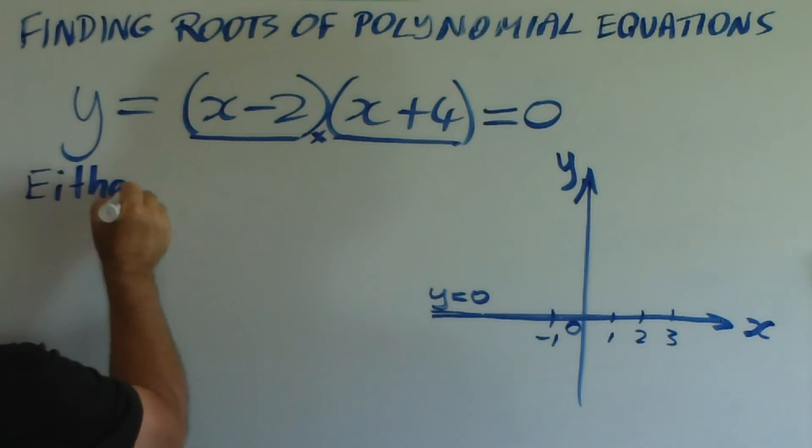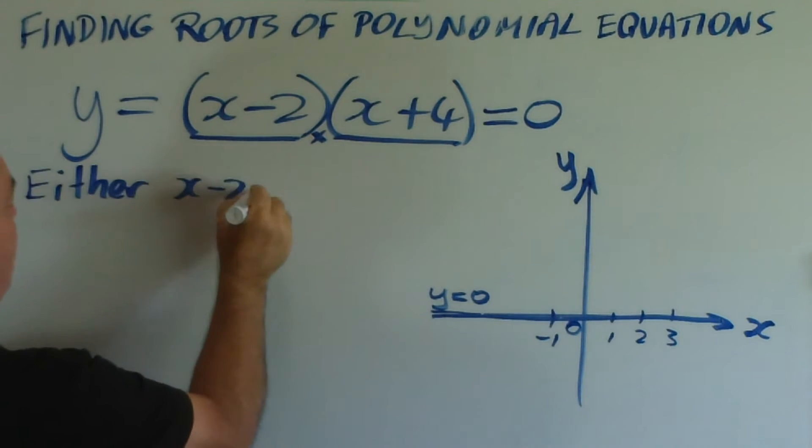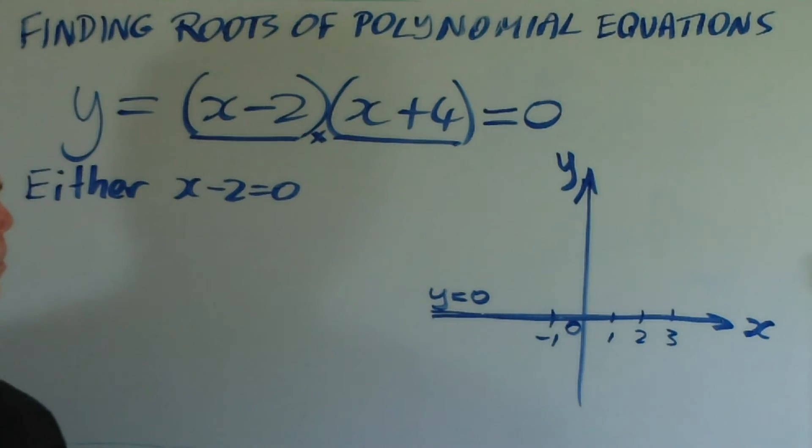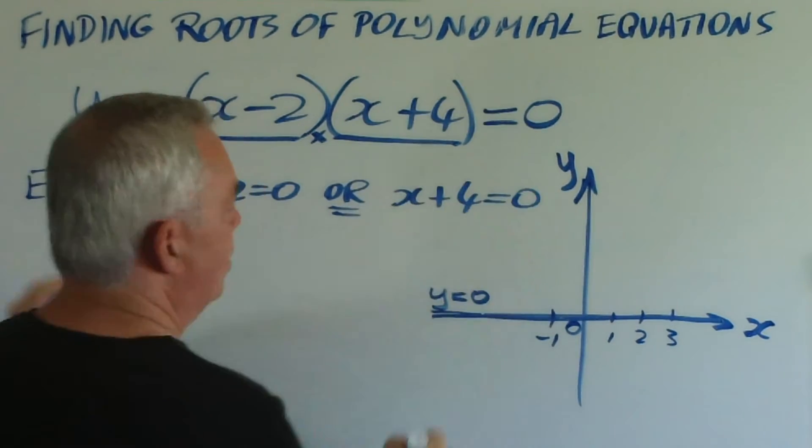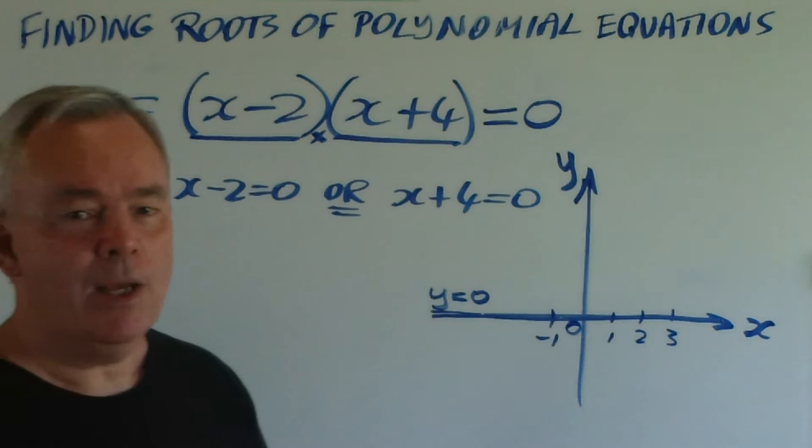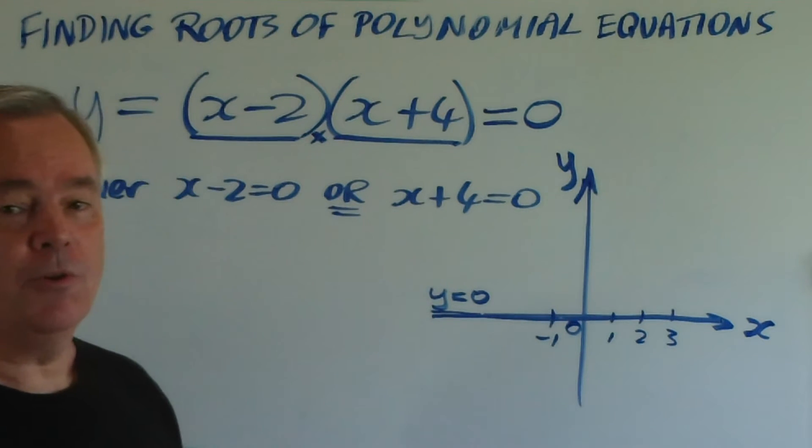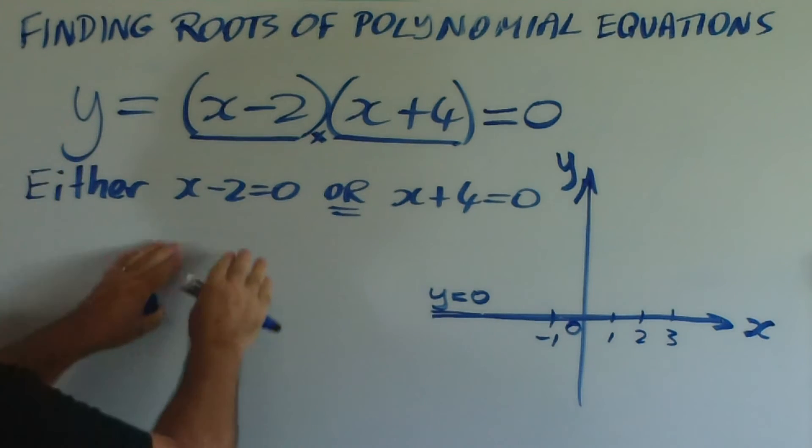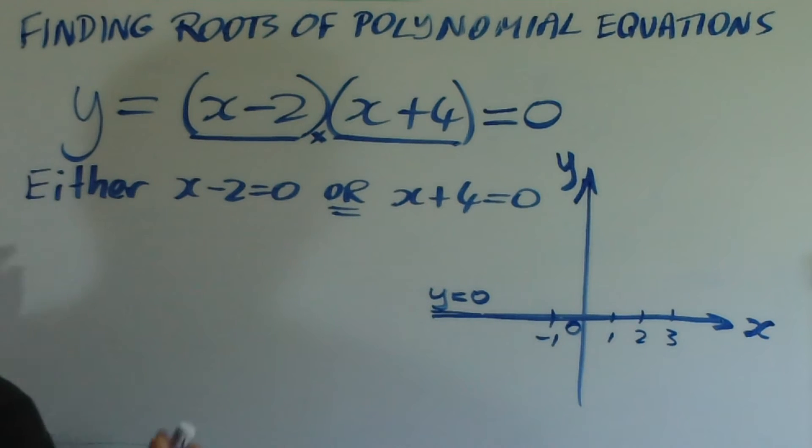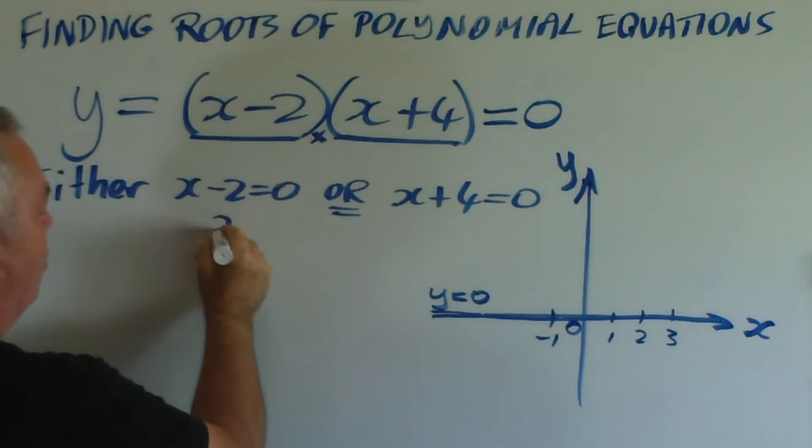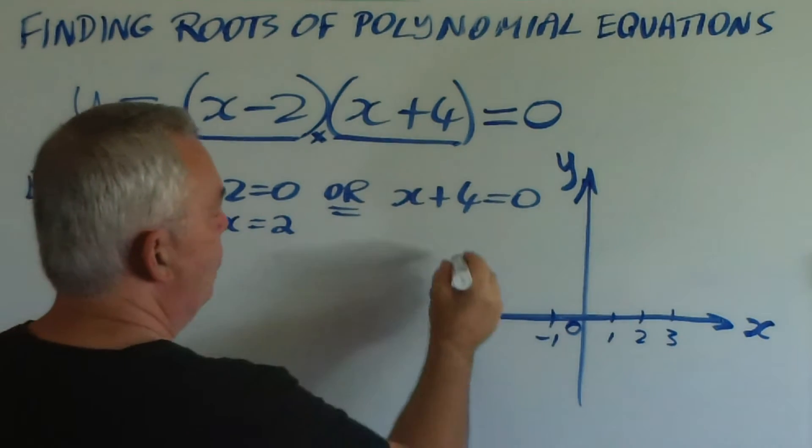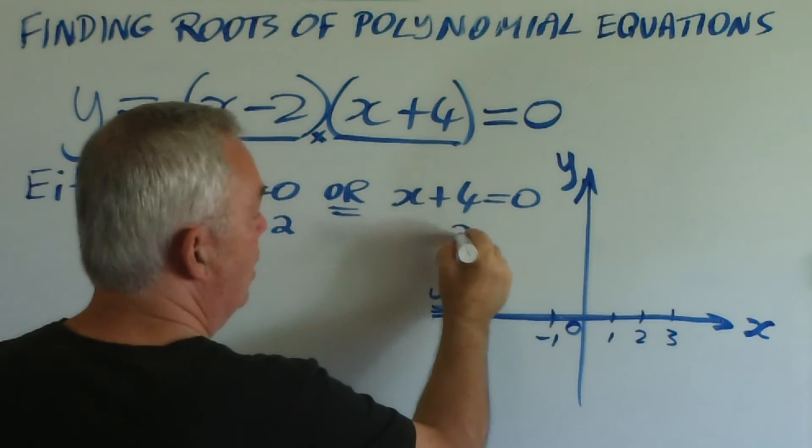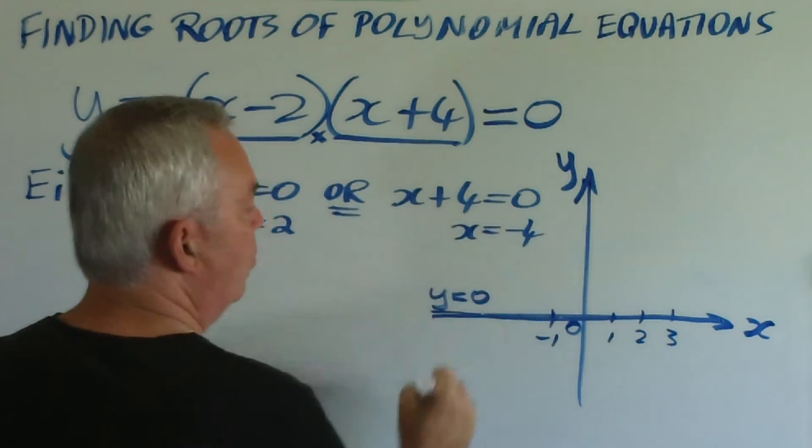That means that if this product between this factor and this factor is to make zero, then one of those must be zero. So, either x minus two is zero, or x plus four must be zero. You have no option. One of those must be true. Now, if x minus two is zero, we can solve that quite quickly and find that x is worth two. If we solve this equation, we find that to make that true, x has to be negative four.